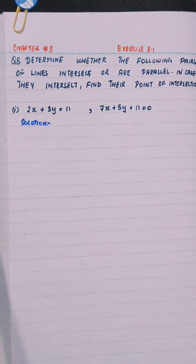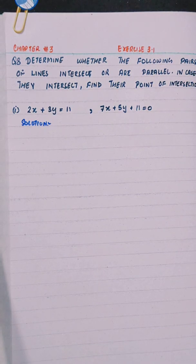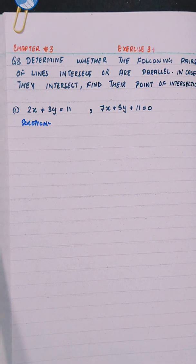Now, Question 8 is: determine whether the following pairs of lines intersect or are parallel; in case they intersect, find their point of intersection. Part 1 is: 2x + 3y = 11 and 7x + 5y + 11 = 0.